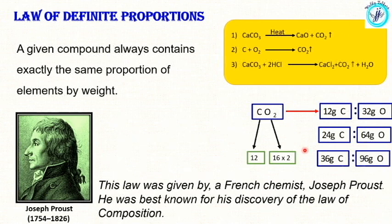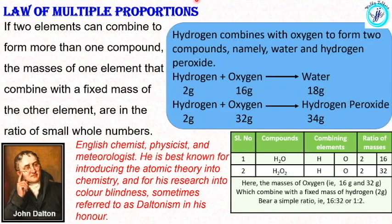The law of multiple proportions states that if two elements can combine to form more than one compound, the masses of one element that combine with a fixed mass of the other element are in the ratio of small whole numbers. We can simplify the formula to a small whole number. That is the law of multiple proportions.